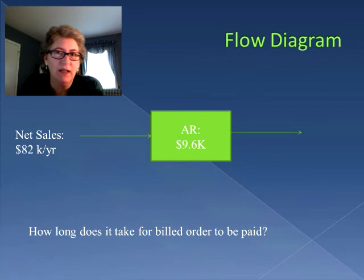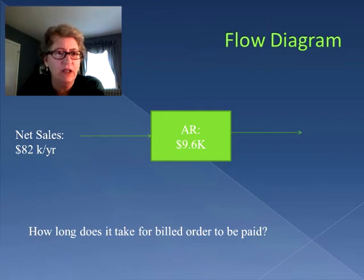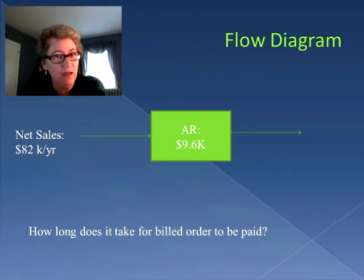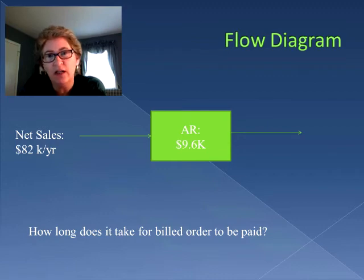We can even apply Little's Law to look at how long it takes for us to get our money back from customers once we've billed them. In this case our throughput rate is our net sales. We're billing our customer $82,000 in a year, but sitting in our accounts receivable — things that have not yet been paid — is $9,600. So we can use our throughput rate of net sales and our inventory of accounts receivable to determine on average how long it takes for a billed order to be paid.